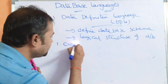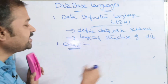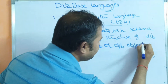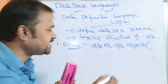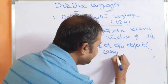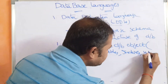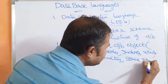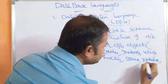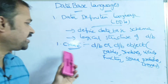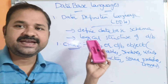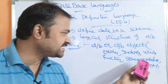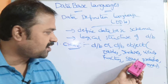The first DDL command is the CREATE command. It is mainly useful in order to create a database or database object. Database objects include tables, indexes, views, functions, stored procedures, and triggers.